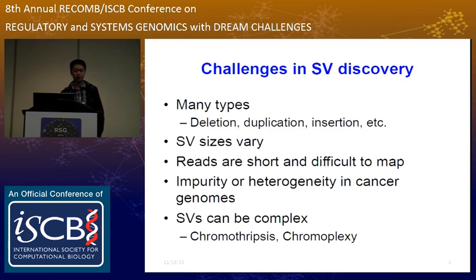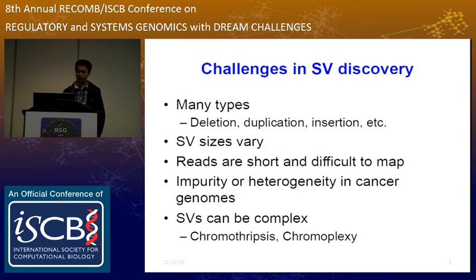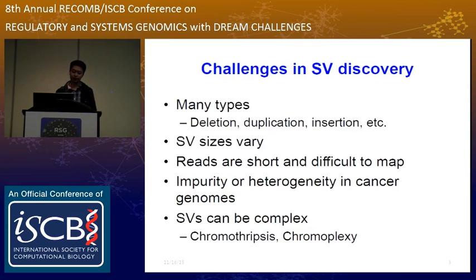For example, recently discovered patterns of chromothripsis and chromoplexy are very extreme, complex patterns of structural variation. The hypothesis of chromothripsis has some implication of rewriting or taking over the traditional view of cancer evolution. So structural variations in cancer are very important.